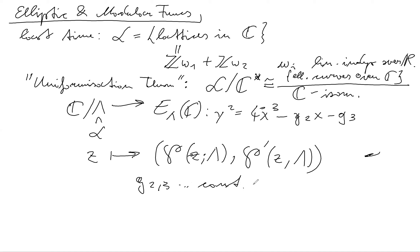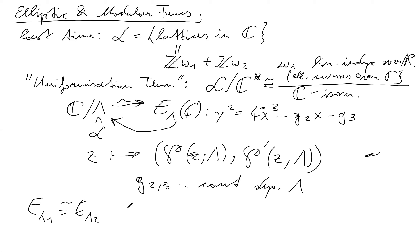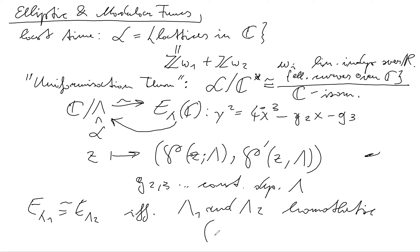Here g₂ and g₃ are constants depending on Λ. We also saw the other direction: going from an elliptic curve E and computing the periods ω₁ and ω₂, which correspond to a lattice. Two elliptic curves E_{Λ₁} and E_{Λ₂} are isomorphic if and only if Λ₁ and Λ₂ are homothetic, meaning Λ₁ = c·Λ₂ for some invertible c ∈ ℂ*.